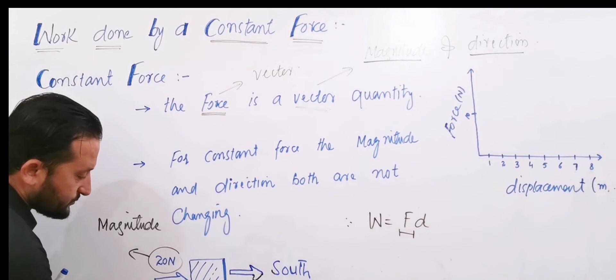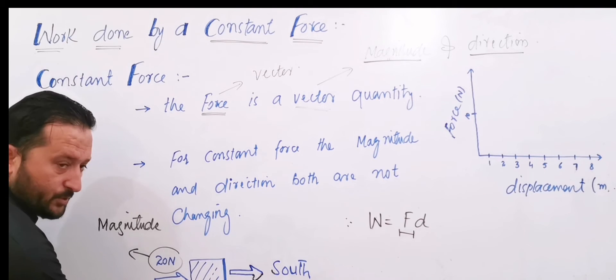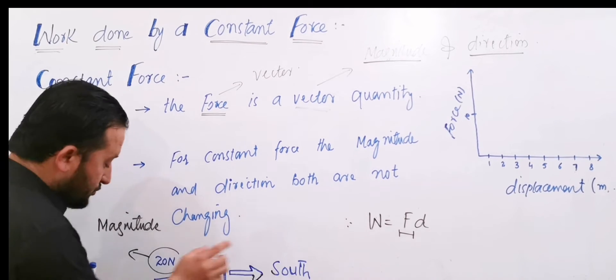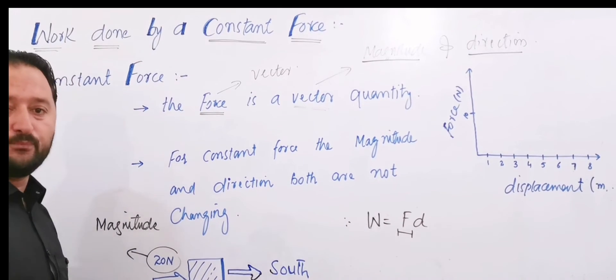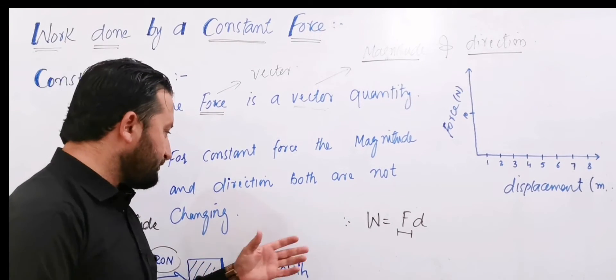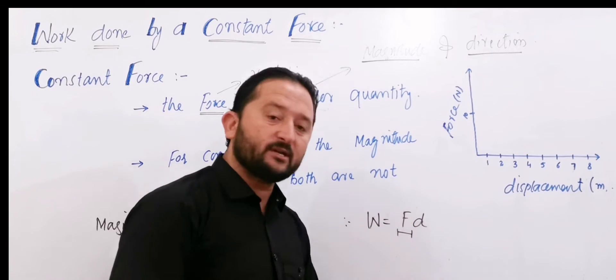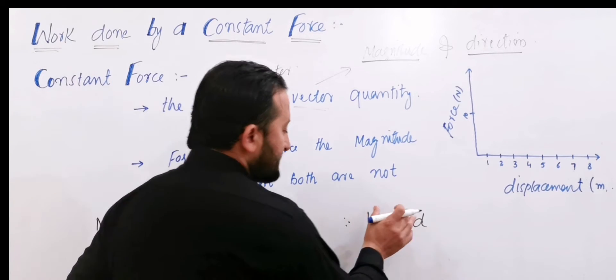For example, 20 Newton force is applied and 2 meters displacement occurs. Again 20 Newton force is applied and 2 meters displacement. Your force is constant, displacement is constant, so work can be done. Work remains constant.